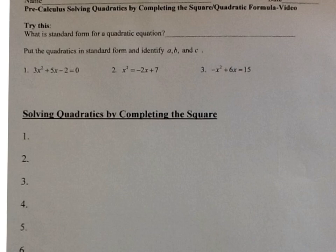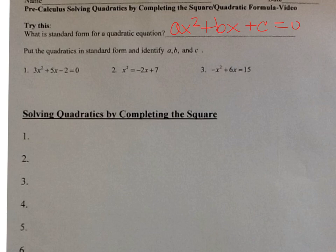So let's see what you got. It says, to start off with, what is the standard form for a quadratic equation? The standard form for a quadratic equation is ax squared plus bx plus c equals 0. So a is the number in front of your x squared, b is the number in front of your x, and c is the number that's all by itself — your constant.